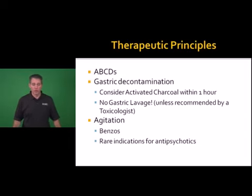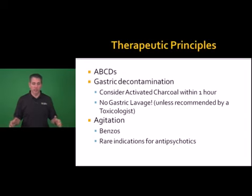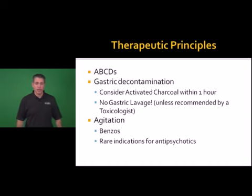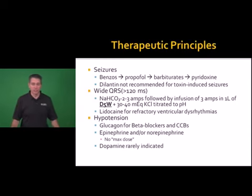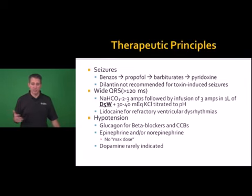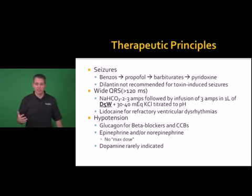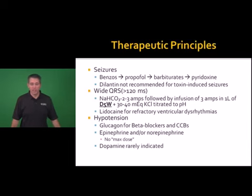For agitated patients, benzodiazepines are the treatment of choice. Rarely, antipsychotics — haloperidol 2.5 to 5 mg — are added if dopaminergic toxicity with residual 'crack dancing' persists after adequate sedation. For toxin-induced seizures, use benzodiazepines, moving quickly to barbiturates or propofol if intubated. Pyridoxine is a final step — isoniazid in particular inhibits pyridoxal phosphate, blocking glutamate-to-GABA metabolism; administering pyridoxine bypasses that inhibition and replenishes endogenous GABA. Phenytoin is not recommended for toxin-induced seizures as it is rarely effective.